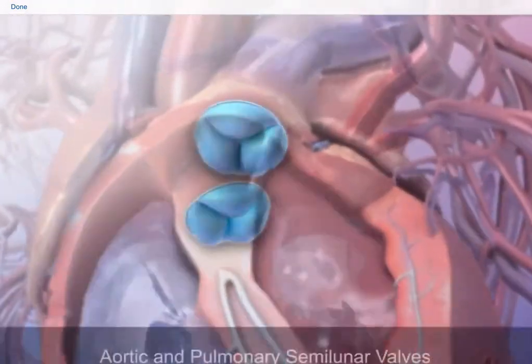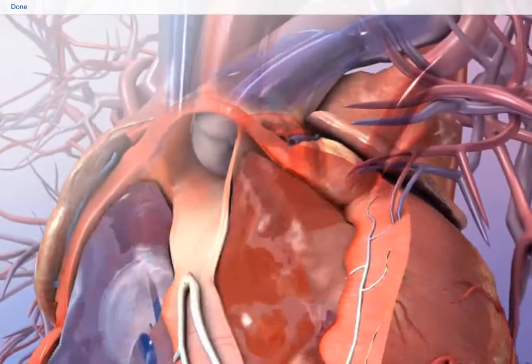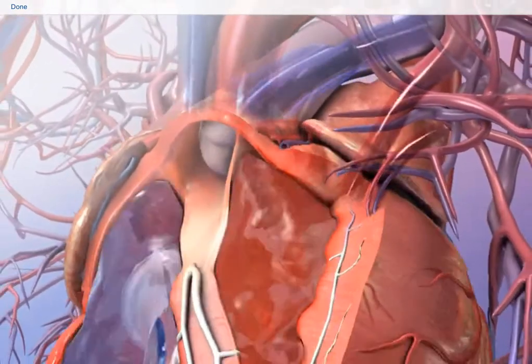The other two valves are the aortic and pulmonary semilunar valves. These valves prevent the backflow of blood into the segment it just exited.